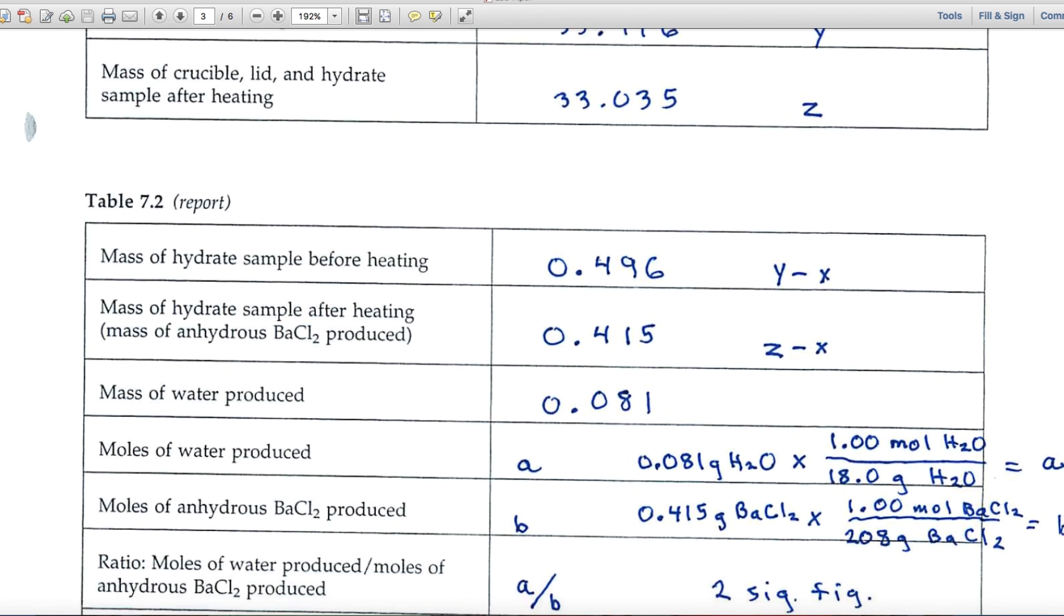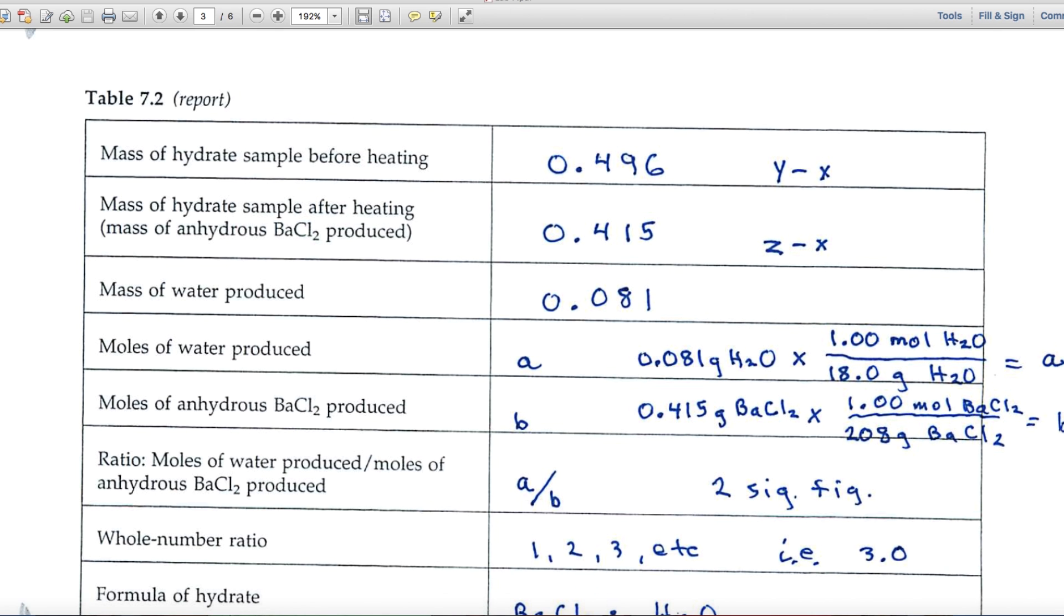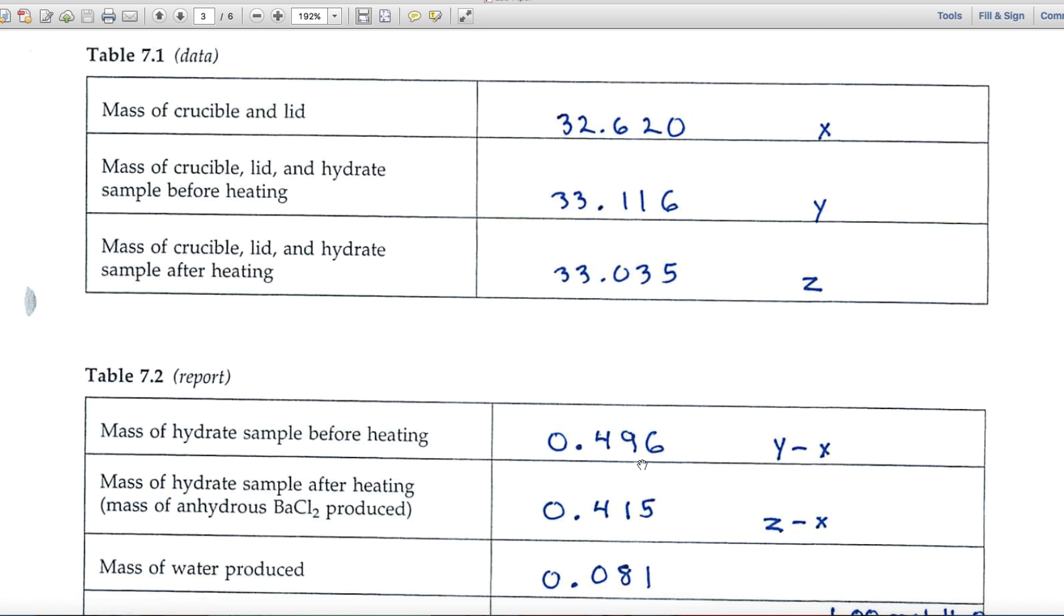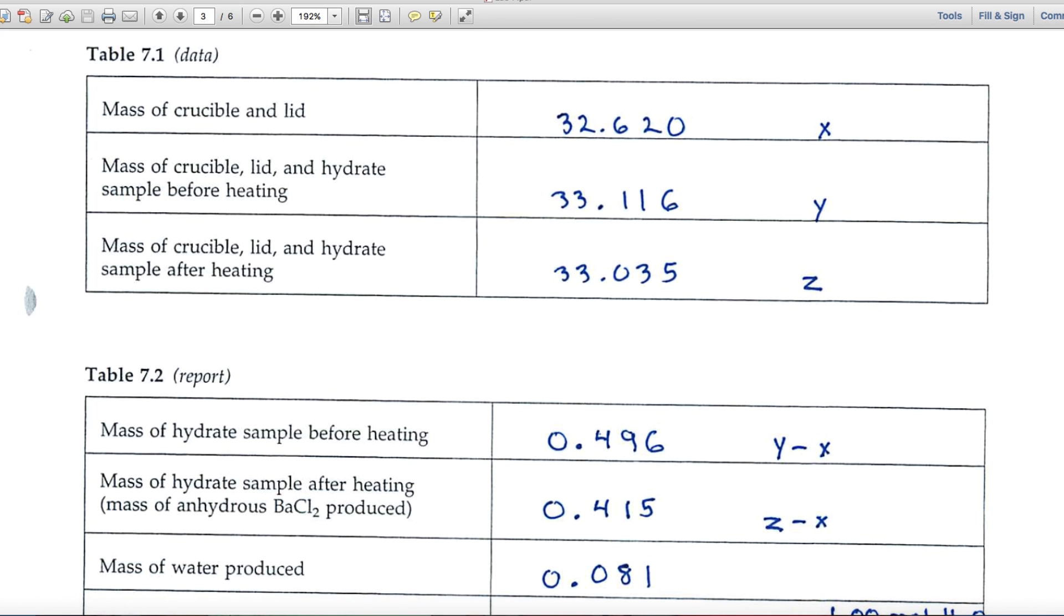Lots of math in this experiment, but it's not complicated. When you work up these numbers, you'll do so in Table 7.2, the report part of the experiment. The mass of the hydrate sample before heating is Y minus X. So it's this largest number minus the weight of the crucible and lid. You'll want this number to be to the thousandth, obeying the principles of significant figures. If these numbers are to the thousandth and you're subtracting, you'll have three significant figures in your answer. The mass of the sample after heating will be Z minus X, and again we want three significant figures expressed to the thousandth.